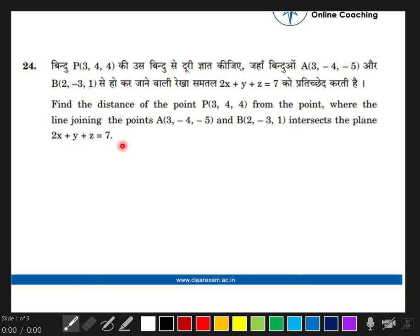Now let's start with our 24th question. Find the distance of the point P with coordinates (3, 4, 4) from the point where the line joining points A(3, -4, -5) and B(2, -3, 1) intersects the plane, and the equation of the plane is given 2x + y + z = 7.